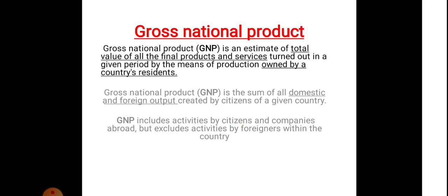In this video you will understand this. Gross National Product is the estimated total value of all final products and services which are produced by a country's residents — that means the citizens, whether they are outside the country or inside the country. That means the output produced by the persons of a country is known as Gross National Product.